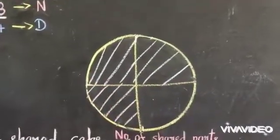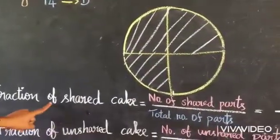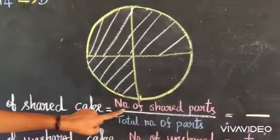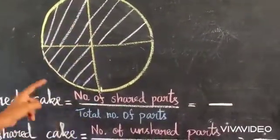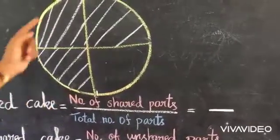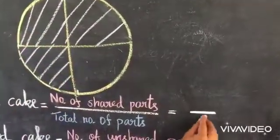What is the fraction of shared cake? Fraction of shared cake is equal to number of shared parts divided by total number of parts. Here, how many parts are there? Yes, four. So four is the denominator.